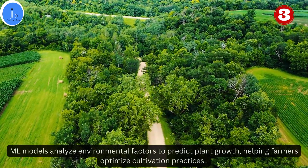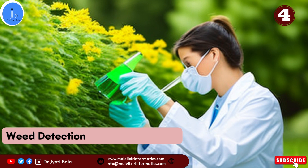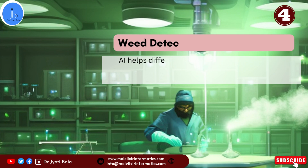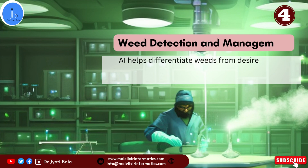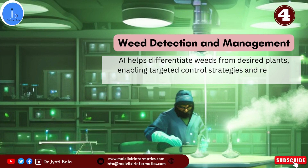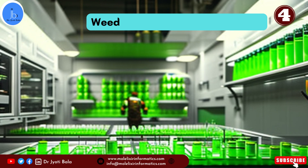Another area is weed detection and management. AI and machine learning techniques can aid in the detection and management of weeds in agriculture and natural habitats. By analyzing images using sensors, algorithms can differentiate between desirable plants and invasive weeds, enabling targeted weed control strategies. This can reduce the need for widespread herbicide use and minimize the negative impact of weeds on crop yield and biodiversity.